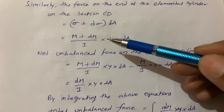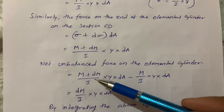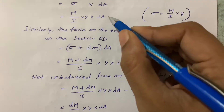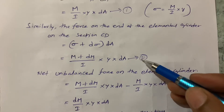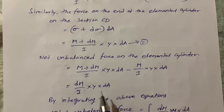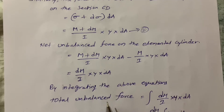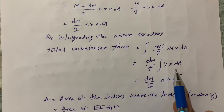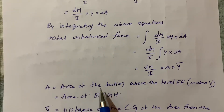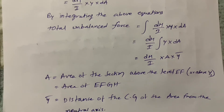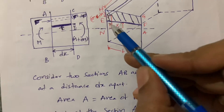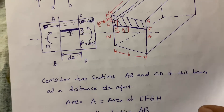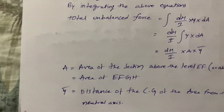These two forces are unbalanced forces — they act in opposite directions. Subtracting equation 1 from equation 2, and integrating, I get the total unbalanced force equal to DM by I into A into Y bar, because the integral of Y into DA is A into Y bar. A is the area of EFGH, and Y bar is the distance from the neutral axis to the center of gravity of area EFGH.